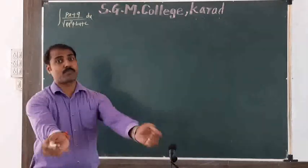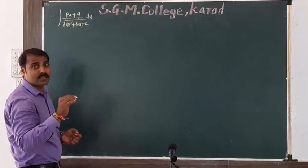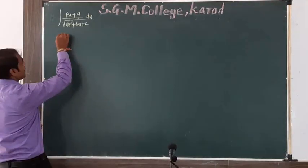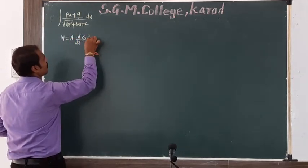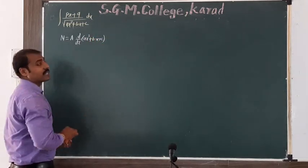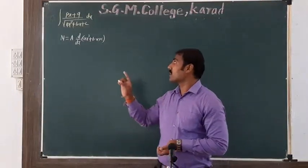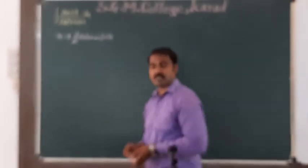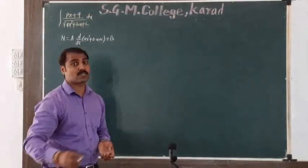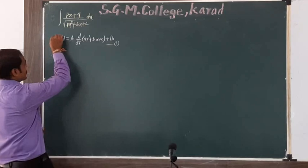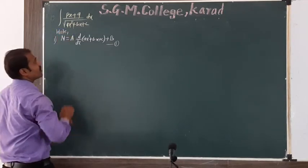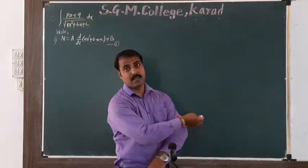This type is much similar to the previous type. The steps of the integration are: first, write the numerator as A into d/dx of (Ax² + Bx + C). Here we write the numerator as A into d/dx of (Ax² + Bx + C) plus B, where A and B are constants which have to be determined. This is our equation number one.